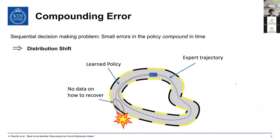The compounding error is a particular problem for any sequential decision-making problem, meaning the actions you take depend on states you reached because of prior actions. If there is a small error in your policy, this error compounds and accumulates over time, causing you to diverge from the original optimal policy. Once you diverge too much, you end up out-of-distribution with no data in your dataset on how to recover from such states.